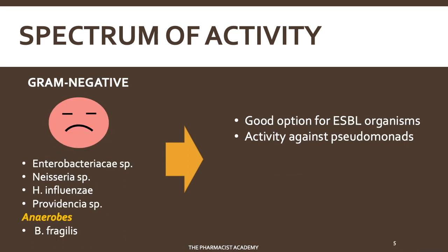Carbapenems also cover gram-negative organisms. They cover Enterobacteriaceae — a large family of gram-negative organisms including E. coli, Proteus, Klebsiella, etc. They also cover Neisseria, H. influenzae, Providencia, and other gram-negative anaerobes. They are a good option for patients with ESBL infections — the drug of choice for ESBLs are carbapenems. I've discussed ESBL resistance in previous videos, so I'll include the link below.